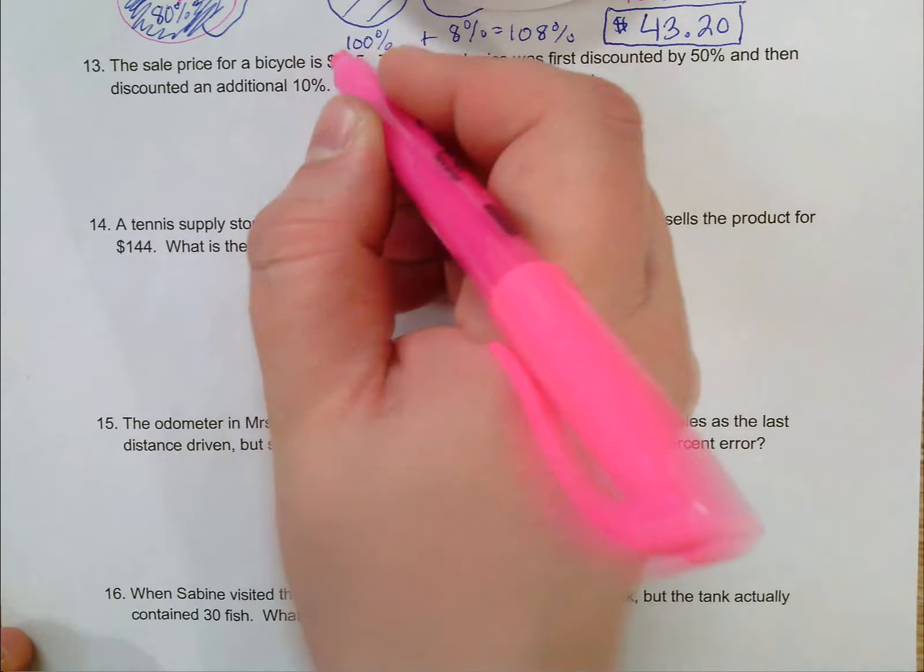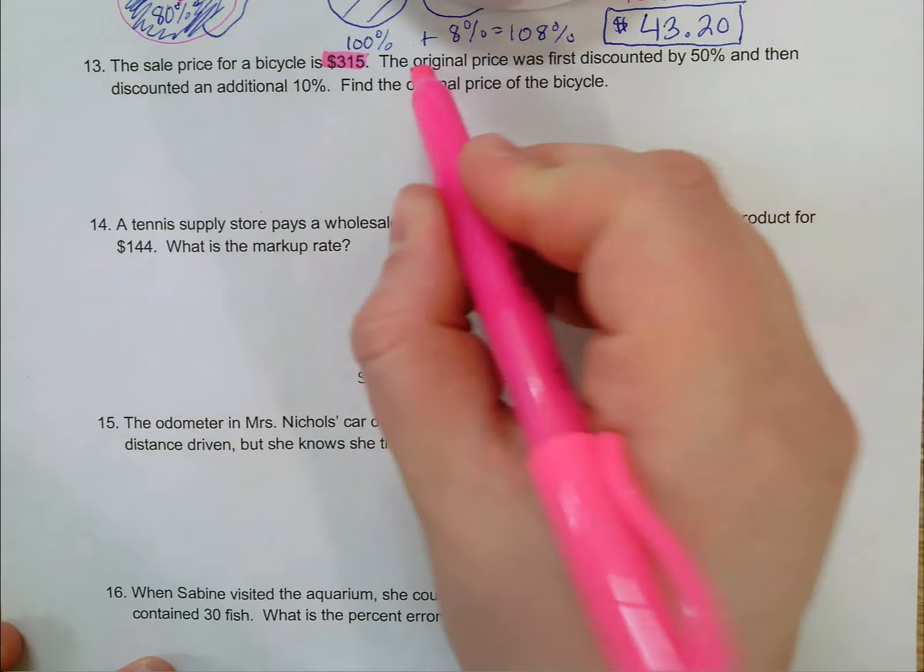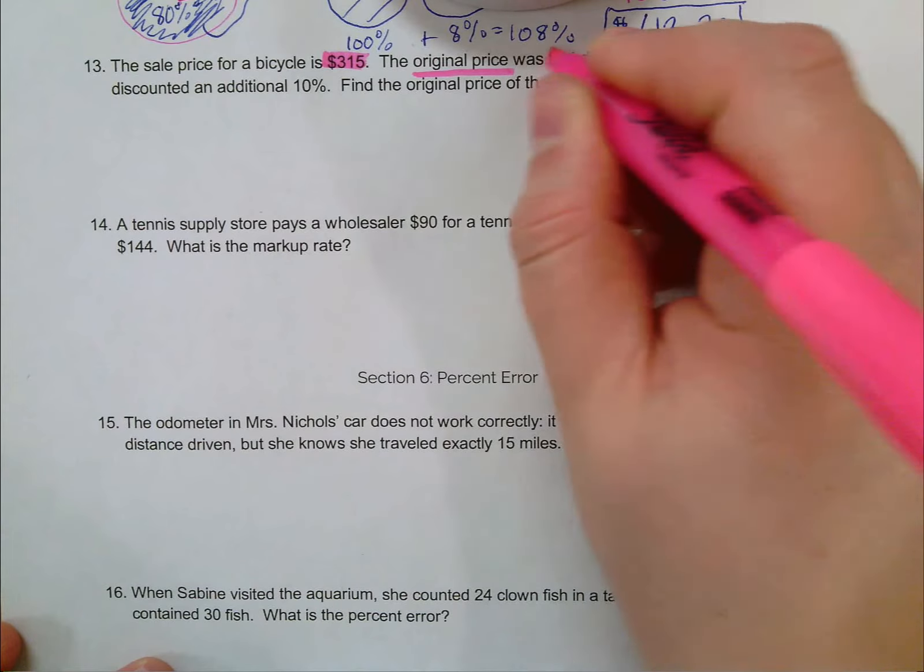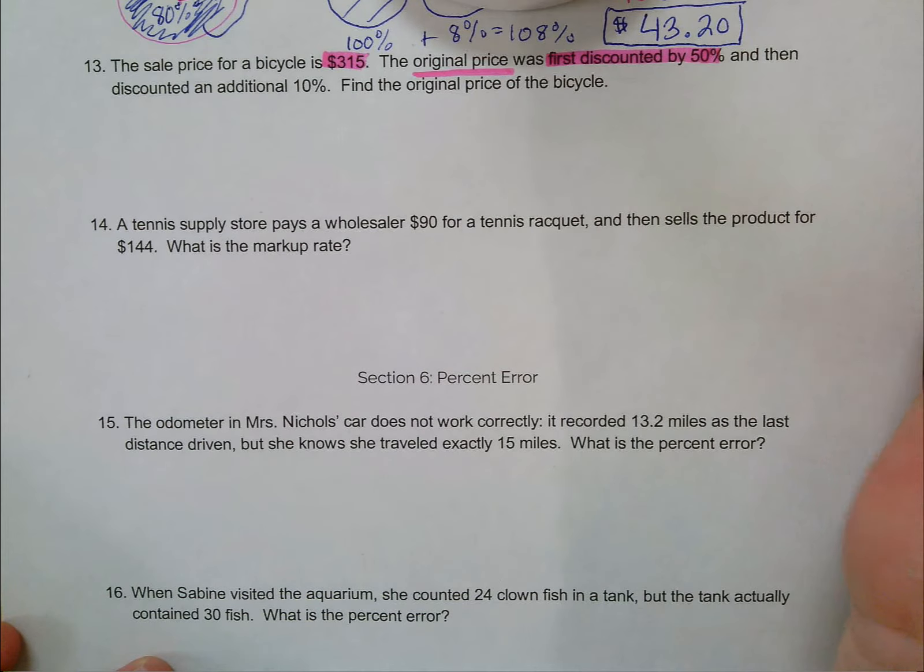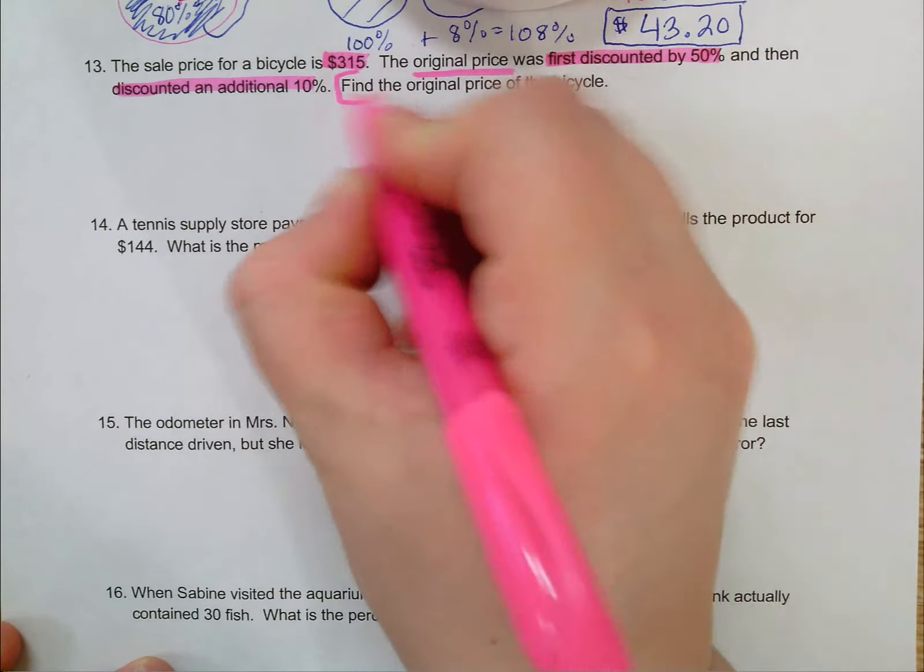Here's what's important. This bicycle is on sale and when it's on sale it's $315. We don't know the original price so we're working backwards, but it was first discounted by 50% and then after that it was discounted an additional 10%, and I want to find the original price.